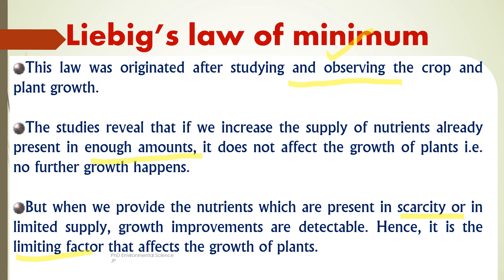For example, imagine a plant needs nitrogen, phosphorus, potassium, and sunlight for healthy growth. If the plant has ample phosphorus, potassium, and sunlight but only a small amount of nitrogen, its growth will be limited by nitrogen. Adding more of the abundant nutrients won't promote growth, but adding nitrogen — the limiting nutrient — will lead to visible improvements in plant growth.